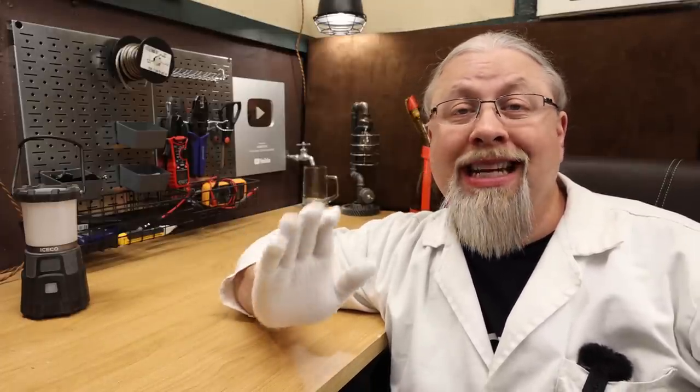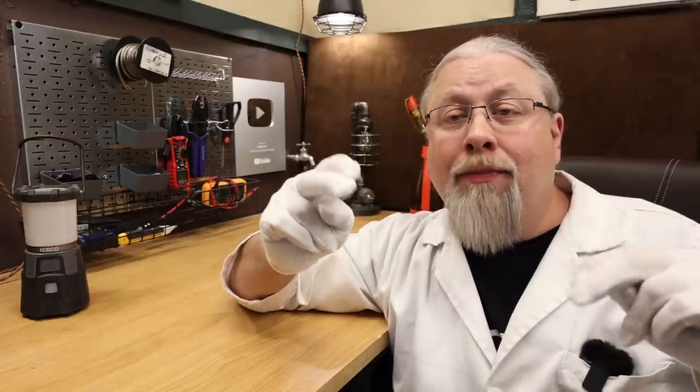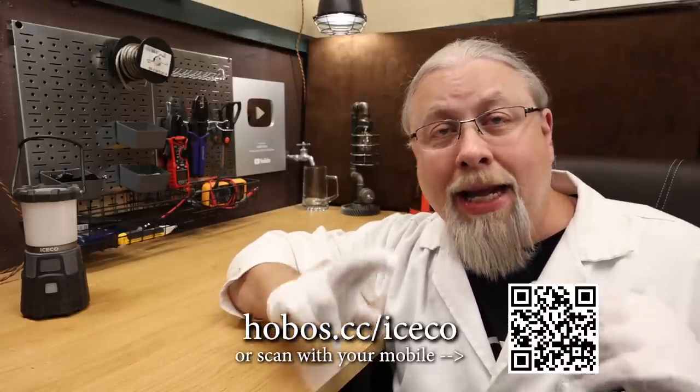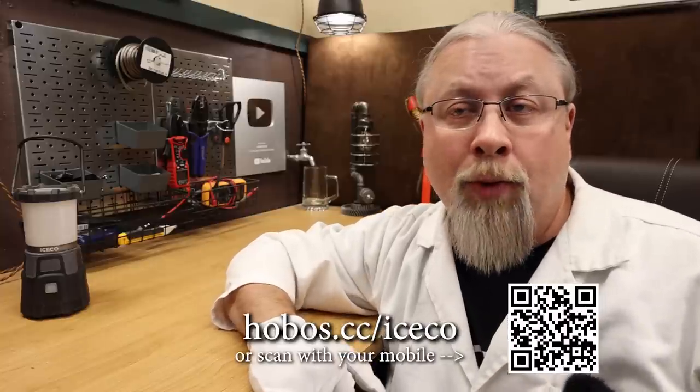Now I just set up this neat new feature for the channel for those of you on televisions or other devices where you can't read the video description or click on links. Now you can just type in what I have here at the bottom of the screen which in this case is going to be hobos.cc slash iceco into your internet browser or just scan the QR code which I'll put right here on your screen. It'll take you directly to IceCo's website and automatically load the Hobotech code for you. That's pretty cool, huh?